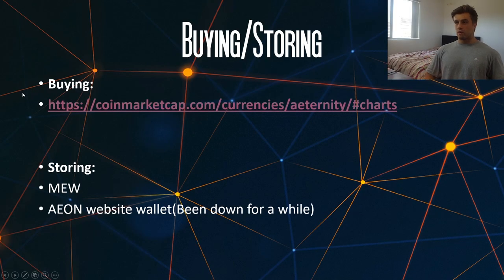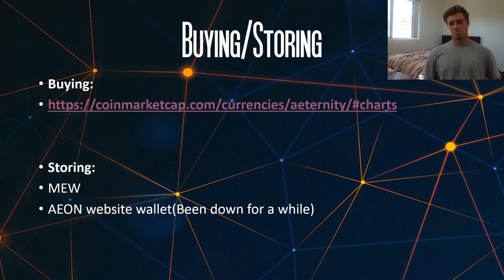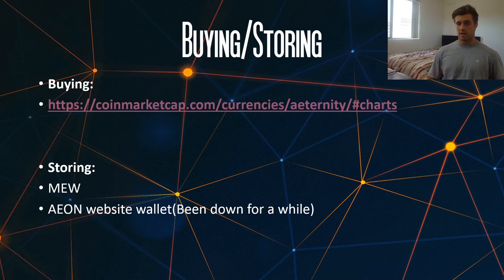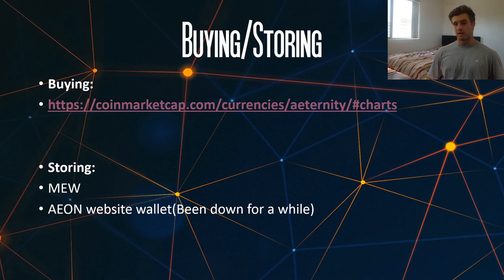In terms of storing, this is probably the second thing that needs improvement — the wallets available. The first option is MyEtherWallet, which isn't my favorite, but I use it with the Ledger Nano S to keep it on a hardware wallet. They also have an Aon website wallet which was developed, however I've been trying for a while and cannot get it up and running. Looking around on forums, people are saying it's been down for quite a while, so hopefully they can fix that situation as soon as possible.